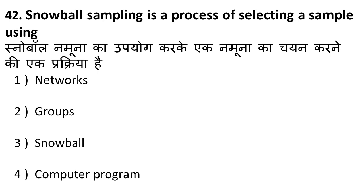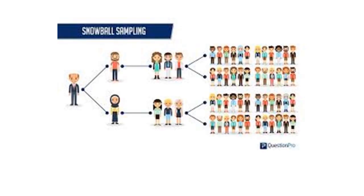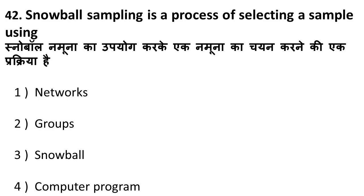Next question: snowball sampling is a process of selecting a sample using what? Snowball sampling is a process where a network is used — one person selects two people, those two select more people, and so on. The sample you selected selects another sample — it grows like a snowball. So snowball sampling is network-type sampling. The correct answer is networks.